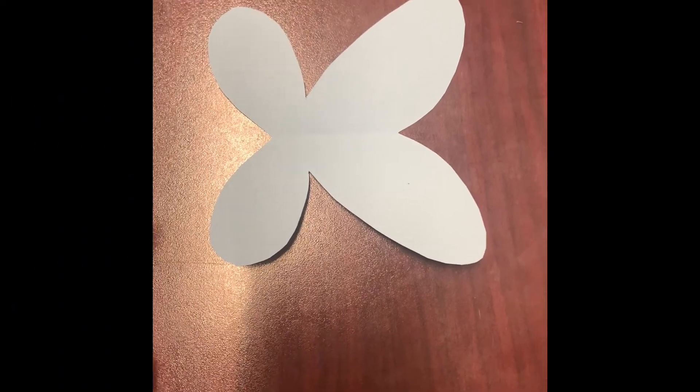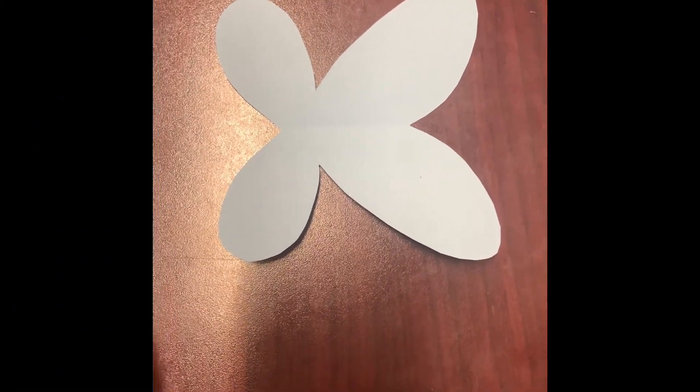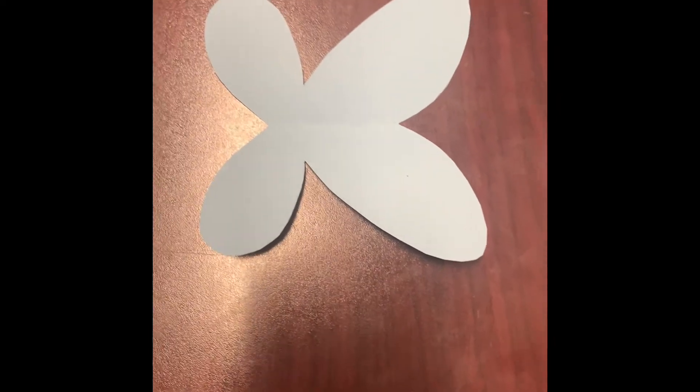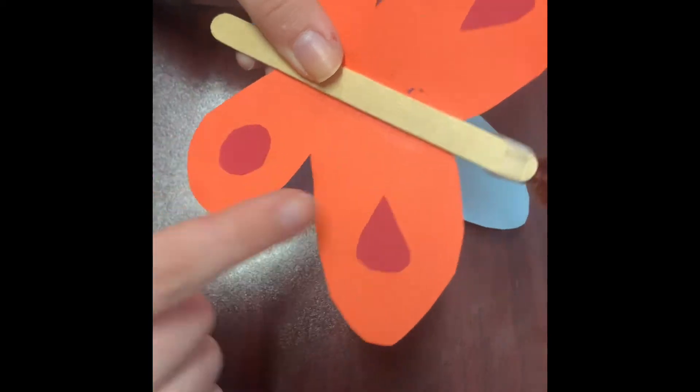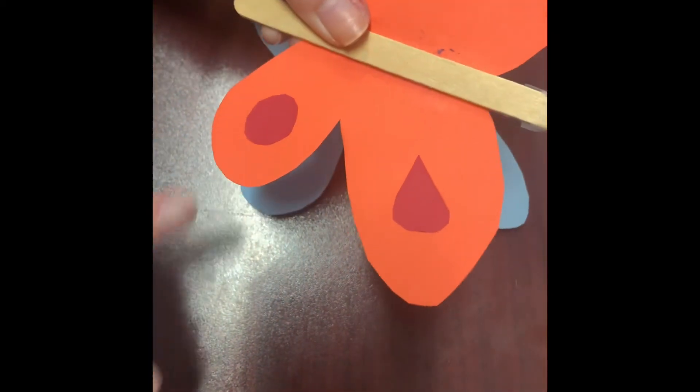After you cut it out, it's supposed to look like this. Then with the next coloring paper you chose, you're going to need to start cutting the shapes of the inside of the butterfly. So we're going to do that.